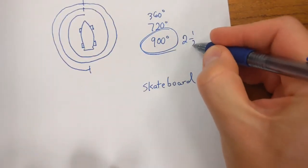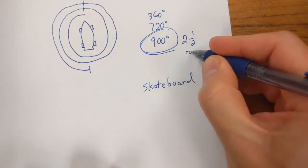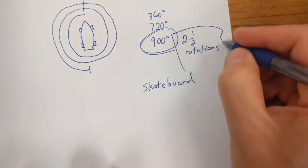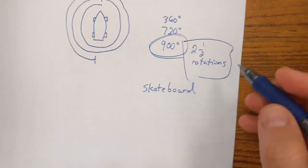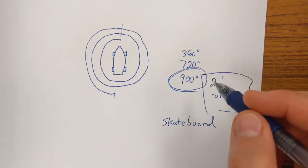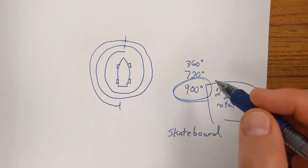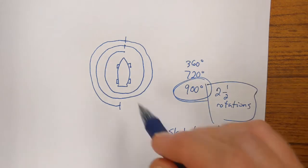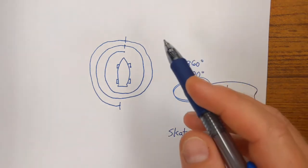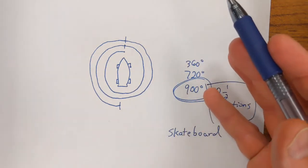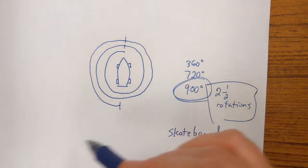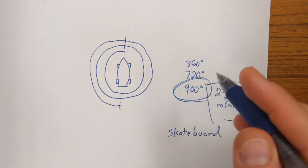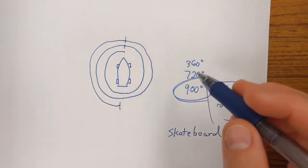It's two and a half rotations that add up to 900 degrees. And when we study rotations — and believe it or not, there's a lot of rotations that go on in trigonometry. I know trigonometry is the study of triangles, but you're going to find there's a lot of rotations as well, because in trigonometry we're studying circles just as much as triangles.